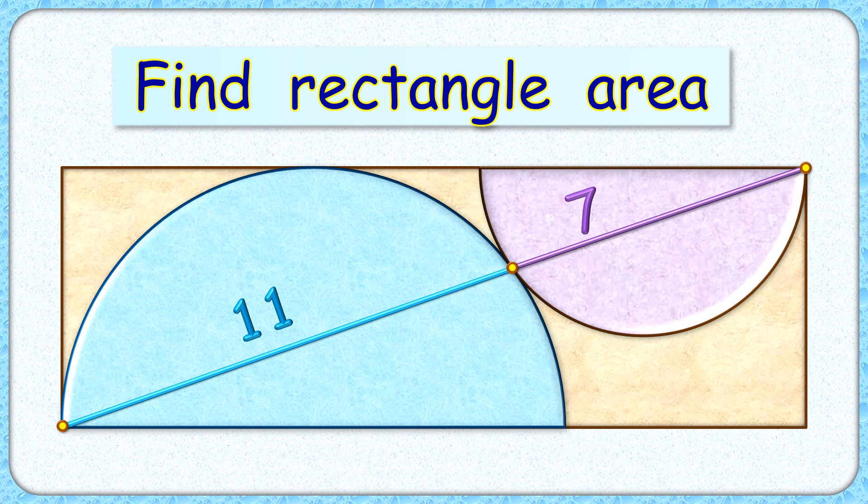Welcome everyone. This interesting question given to us is a rectangle with two semicircles inside it. The diagonal of the rectangle is getting divided into 11 centimeters and 7 centimeters.